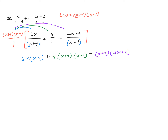Now we've got some work to do here, so let's be careful. Distribute the 6X, giving me 6X squared minus 6X. A little foiling here will give me X squared plus 3X minus 4. Now distribute the 4 in there, giving me plus 4X squared plus 12X minus 16. On the right side, FOILing out gives 2X squared, and outer plus inner gives plus 10X, plus 8.